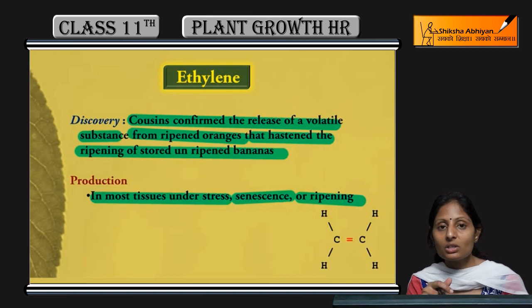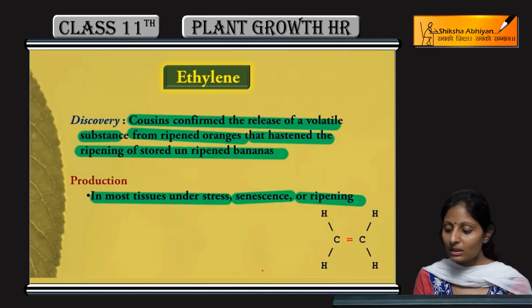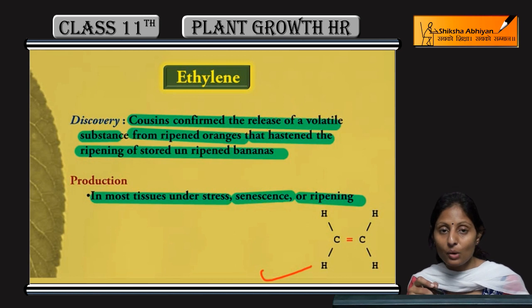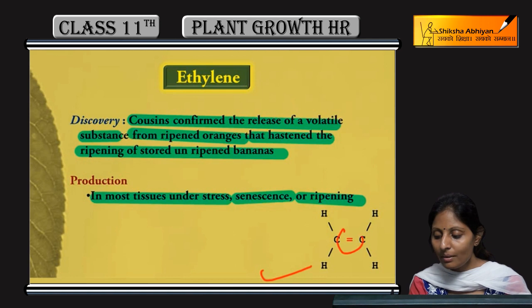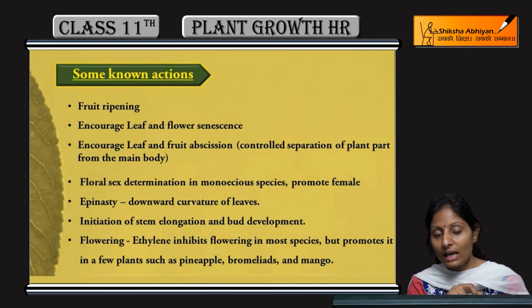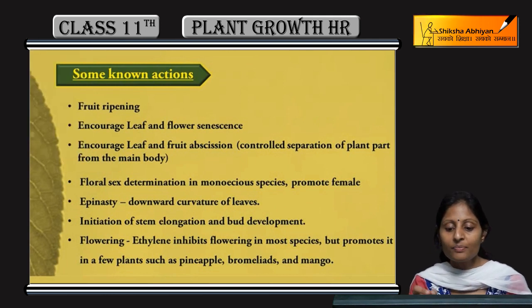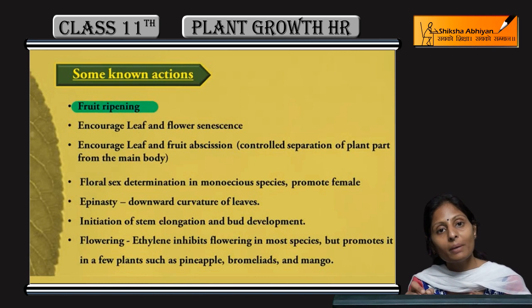If we look at the structure of ethylene, it is a very simple structure. It is a two-carbon containing compound with a double bond present between the two carbons. So this is the structure of ethylene.